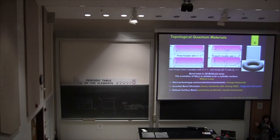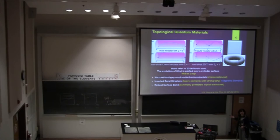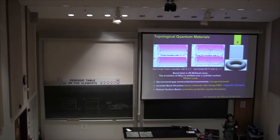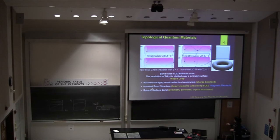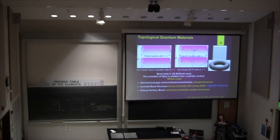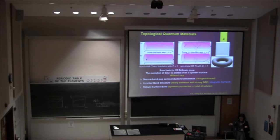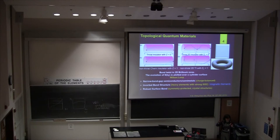We also need band crossing. To generate band crossing, we need heavy elements with very strong spin-orbit coupling. Heavy elements are like 4d, 5d, 4s, 4p, 6s, 6p — we can identify them in the periodic table. We also need a robust surface band: this band crossing on the surface needs to be protected by symmetry, meaning it's better to make specific compounds with specific crystal structures.